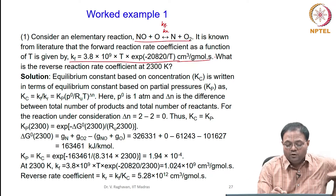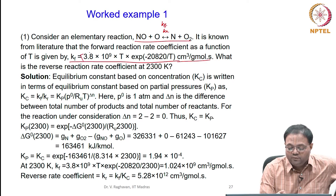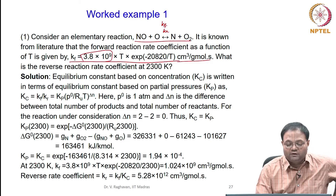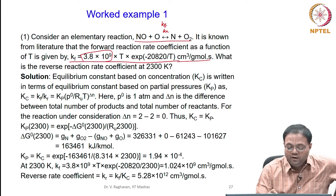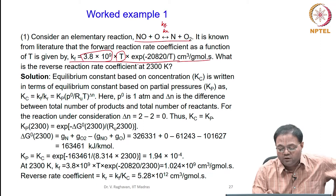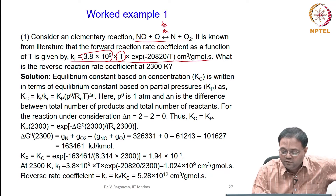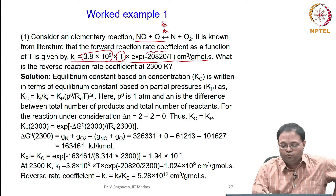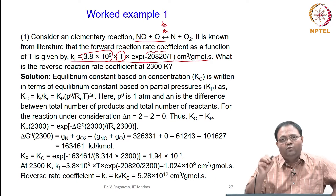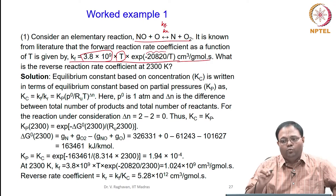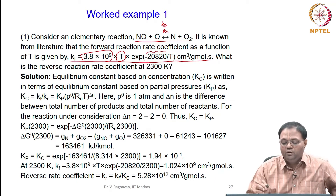The expression for KF: the first term is the pre-exponential factor A, then T to the power m where m equals 1, multiplied by exponent of minus Ea by RuT. Here Ea by Ru equals 20,820.